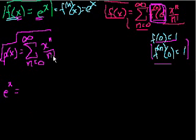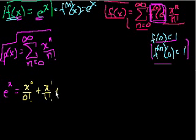Well, what is the sum? Well, it's x to the 0 over 0 factorial, plus x to the 1 over 1 factorial, plus x squared over 2 factorial. And you keep going. And of course, that's equal.